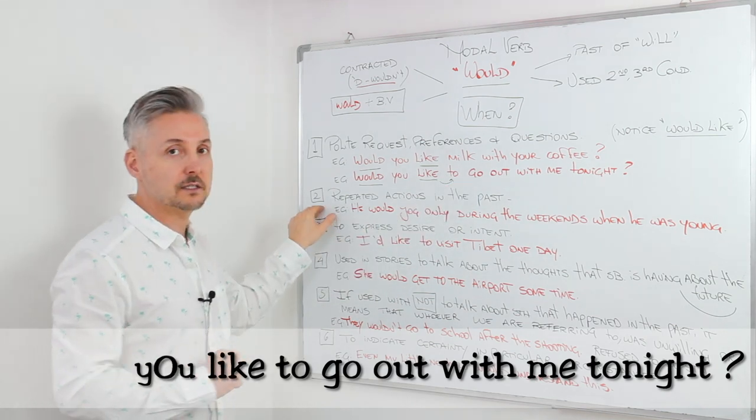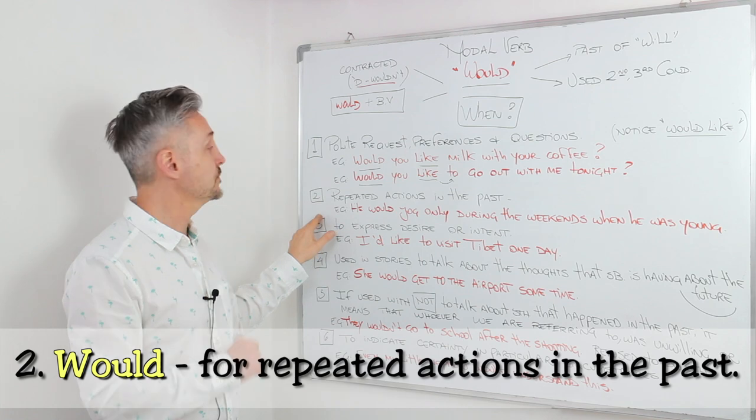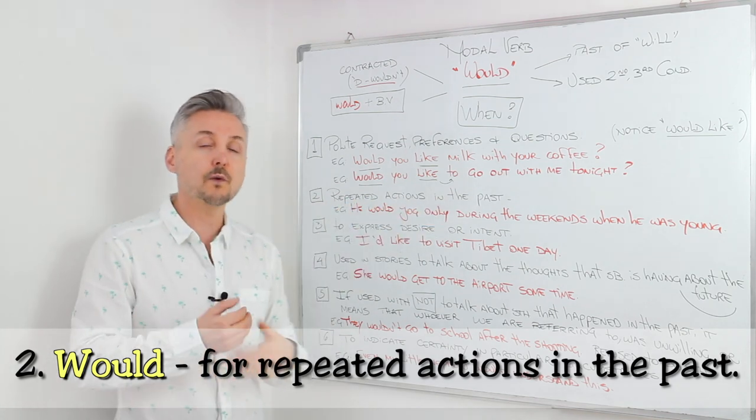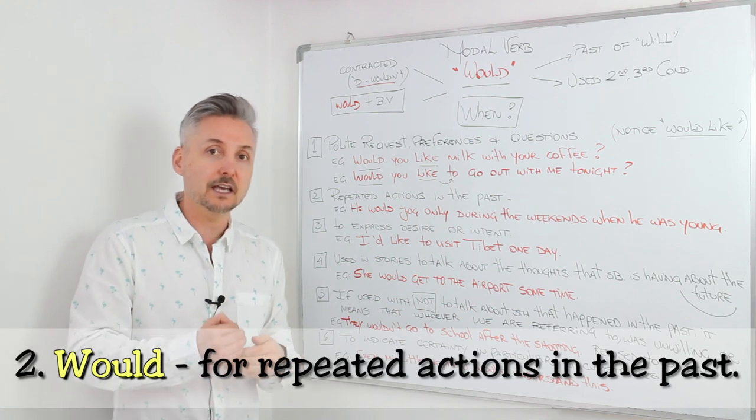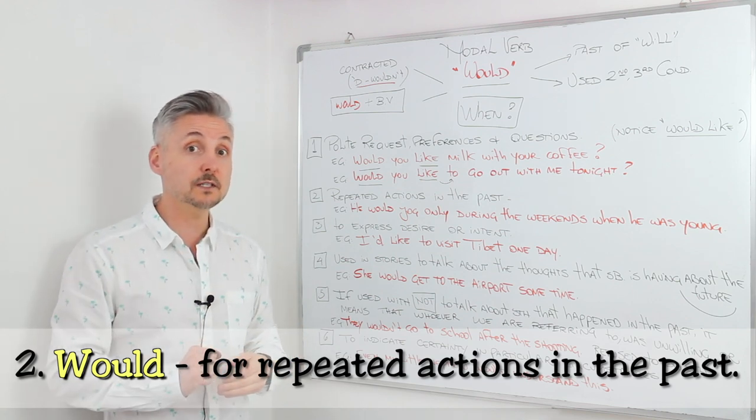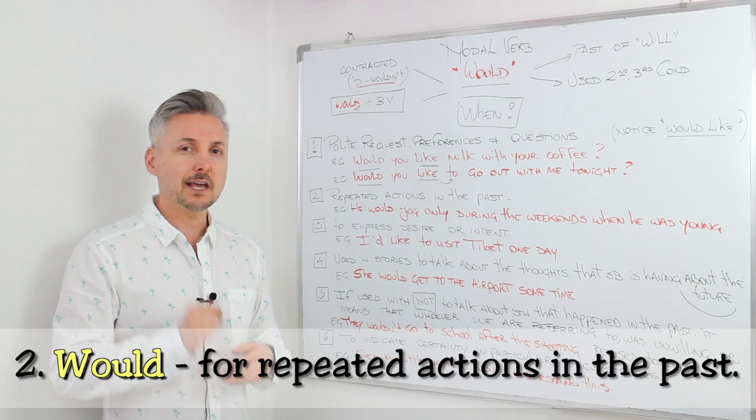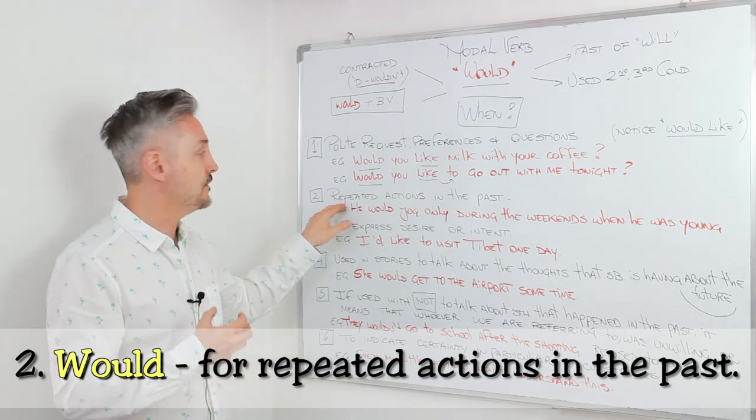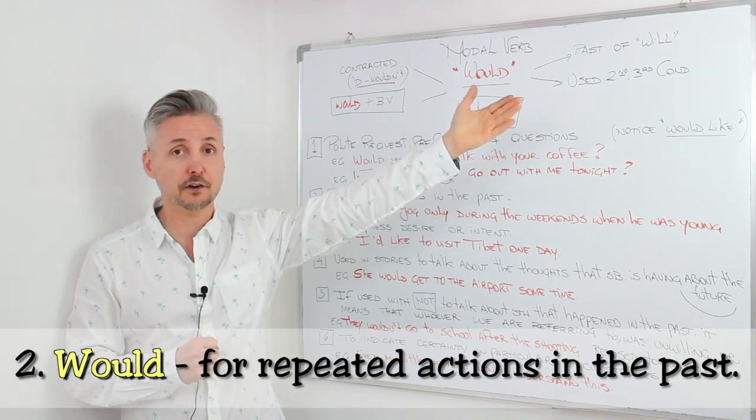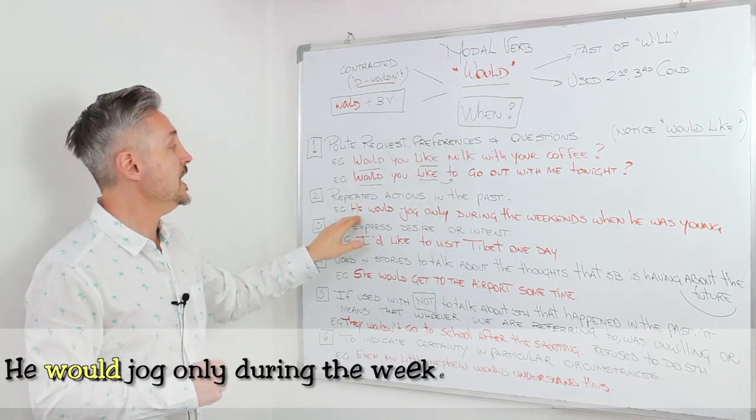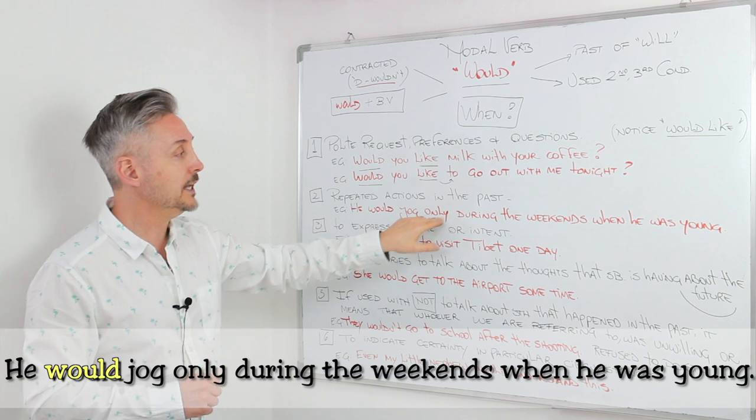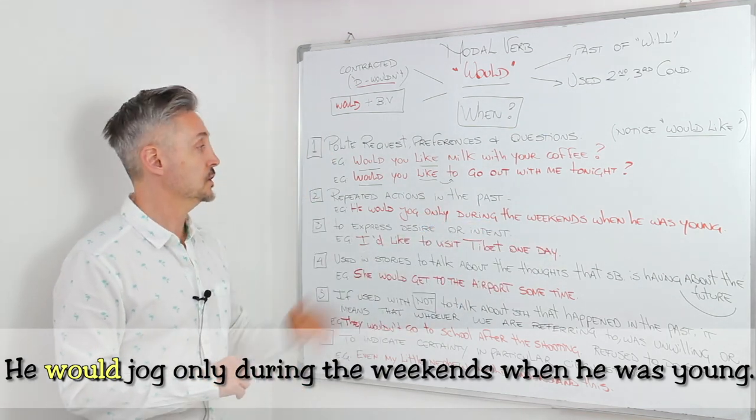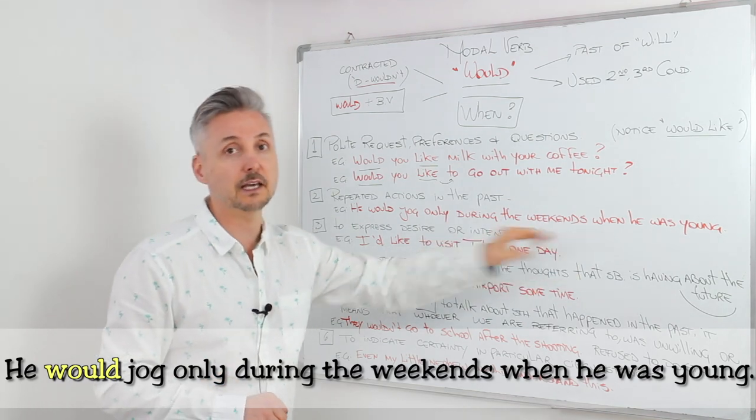Now, the second usage. For repeated actions in the past - when something happens repeatedly in the past. Do not confuse it with used to. If you want to watch a lesson on this part of grammar, you may click here. He would jog only during the weekends when he was young. So, an action repeatedly in the past.